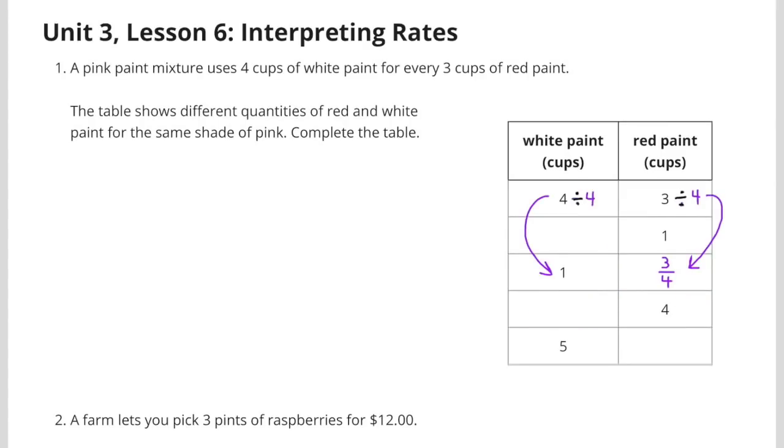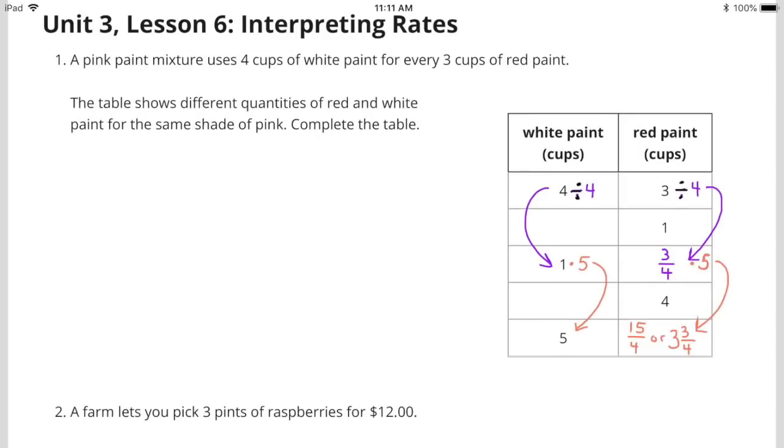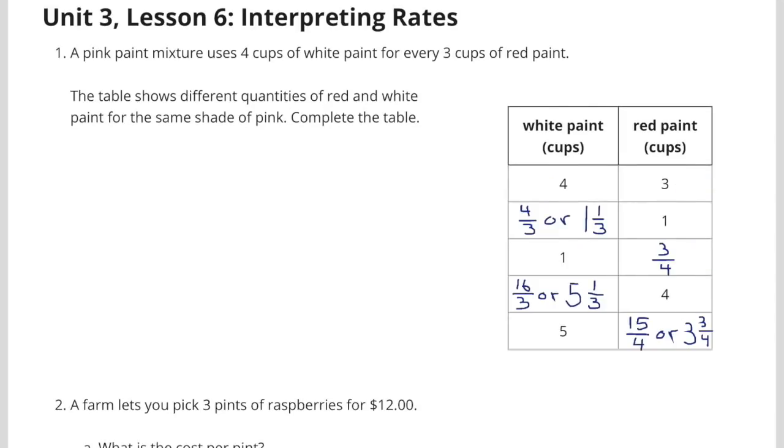I'm going to divide the 4 by 4 to get 1 on the white paint side, which means I need to divide 3 by 4 on the red paint side, which gives me 3 fourths. So for every 1 cup of white paint, I'll have 3 fourths cups of red paint. Now I can multiply 1 cup of white paint times 5 cups to get 5 cups of white paint. And if I multiply the white paint by 5, I must multiply the red paint by 5. So 3 fourths times 5 equals 15 fourths, or 3 and 3 fourths. Here's a look at the table with each of the quantities of red paint and white paint.